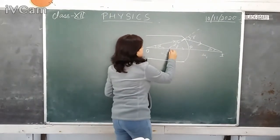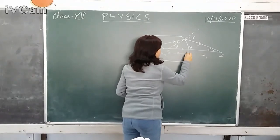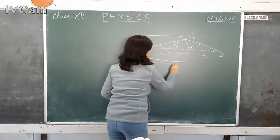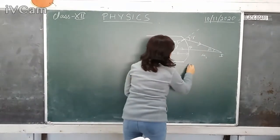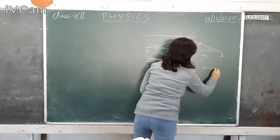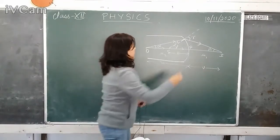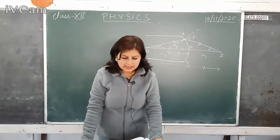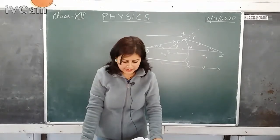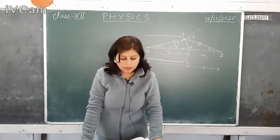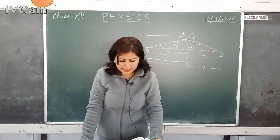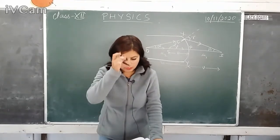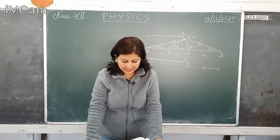The distance between the pole and the center of curvature is equal to R, the radius of curvature. The distance between the pole and the object is U, the object distance. The distance between the pole and the image location is V, the image distance. We have a refracting surface XY whose pole is at P and center of curvature is at C. This convex surface separates a denser medium of refractive index mu2 from a rarer medium of refractive index mu1, where mu2 is greater than mu1. O is the object on the principal axis whose real image is at I.